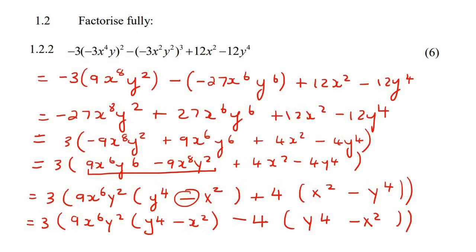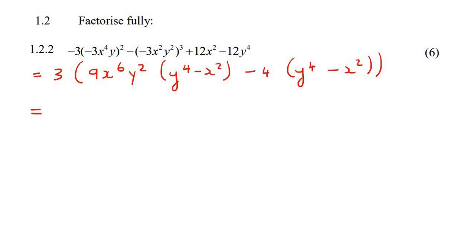So now, if we look inside here, we can see that we now have a bracket that is exactly the same. So now you end up with equals to three. And now what we're going to do is we are going to take out that as a common factor. So y4 take away x2. And then you're going to be left with 9x6 y squared take away 4. So there we go.